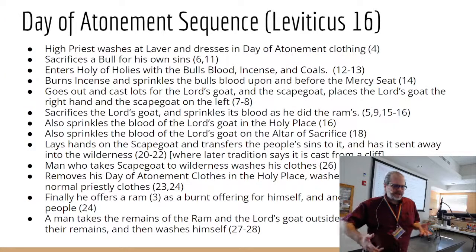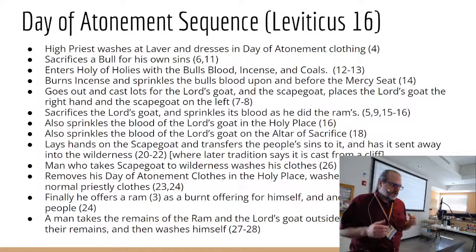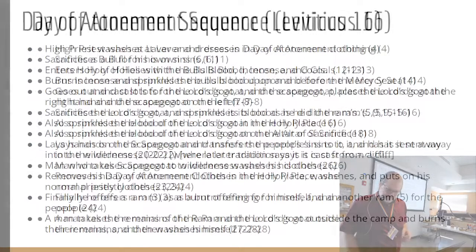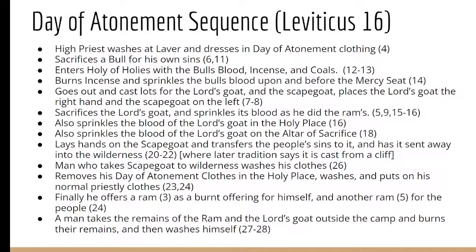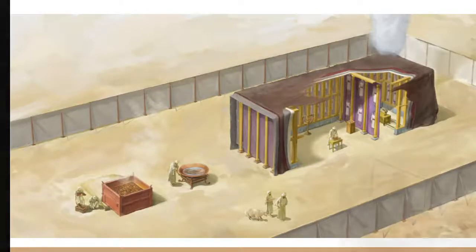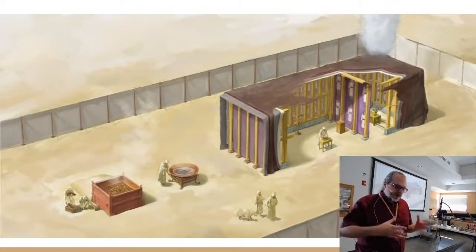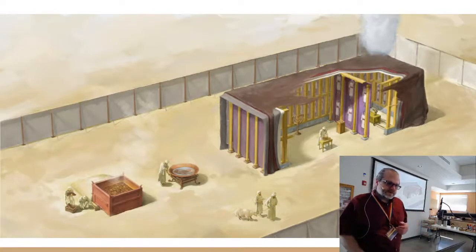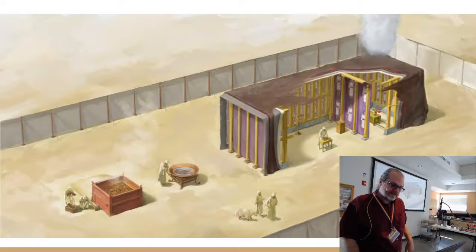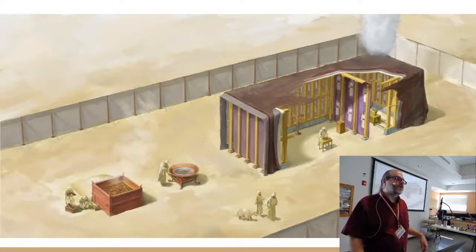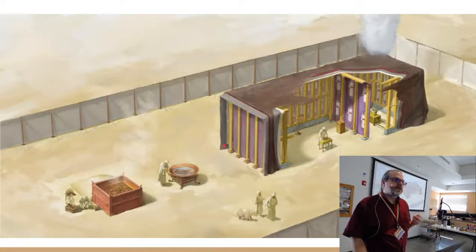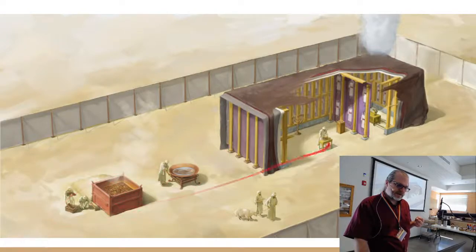The Day of Atonement has a long list of ritual steps we'll go through in order. Recall it takes place at the Israelite Temple, which has three main parts: a courtyard, the Holy Place, and at the very back, the Holy of Holies, where the Ark of the Covenant is kept. Out in the courtyard is the altar of sacrifice and the laver of water for washing. Later temples added two pillars in front and side storage rooms, but all have these three main divisions.